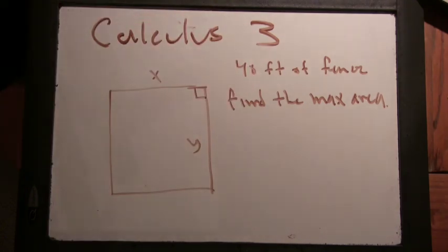If x and y both equal 10, you have 40 feet of fence if you have to enclose the max area. So x and y have to both equal 10. Then you can close to 100. Alright.